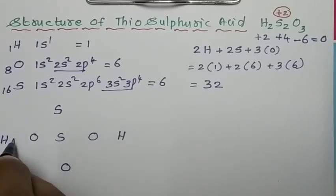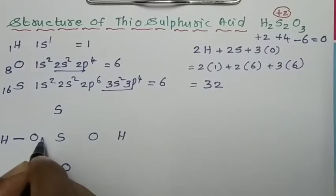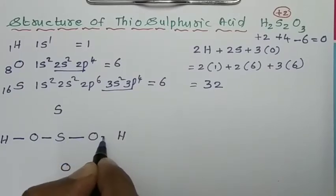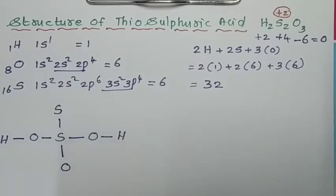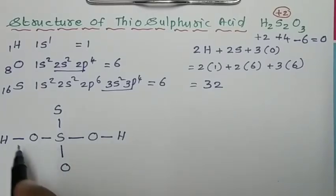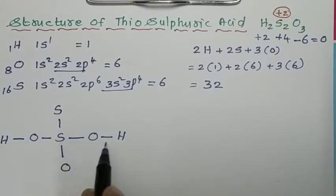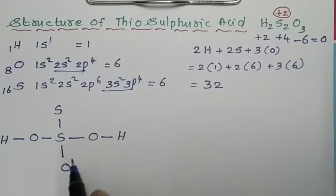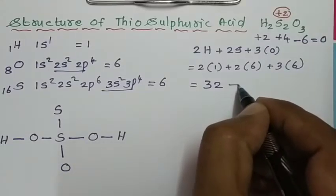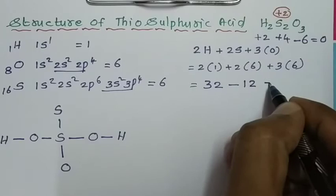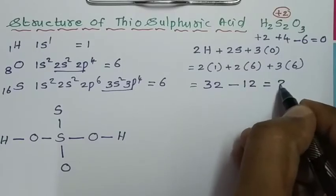As usual, join all the atoms by a single bond — that gives six single bonds. One bond contains 2 electrons, so six bonds contain 12 electrons. Therefore, 32 minus 12 equals 20 electrons remaining.